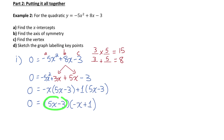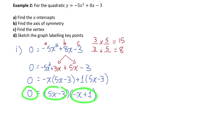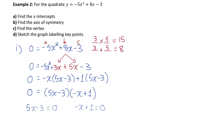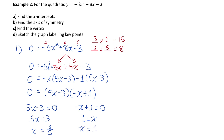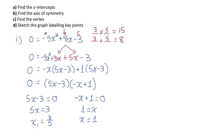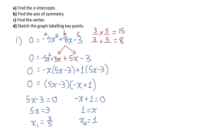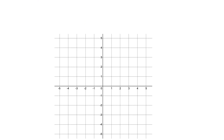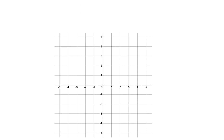Setting each factor equal to zero: from 5x minus 3 equals 0, I get x equals 3/5. From negative x plus 1 equals 0, I get x equals 1. So the two x-intercepts are at 3/5 and at 1. On the graph, 3/5 as a decimal is about 0.6, so the x-intercepts are very close together.